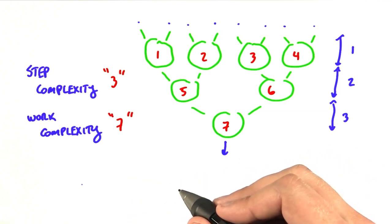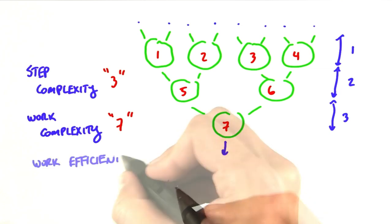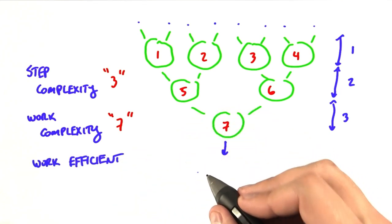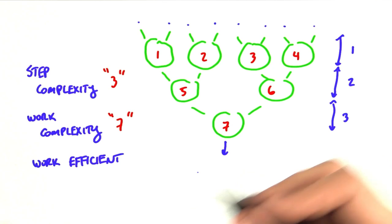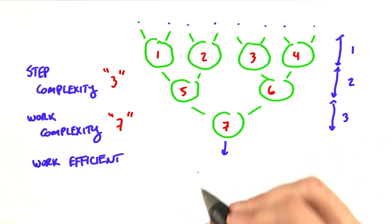And one more piece of terminology. We will say that a parallel algorithm is work efficient if its work complexity is asymptotically the same, so within a constant factor, as the work complexity of the sequential algorithm.